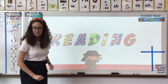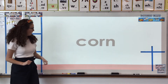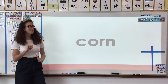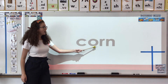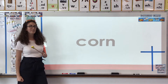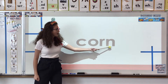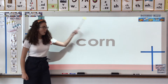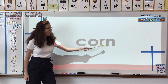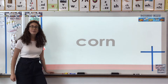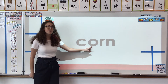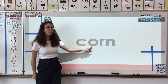Here we go. What is this word? We have C, O. Corn. Corn. What sound is C making? The hard sound because there's an O following C.